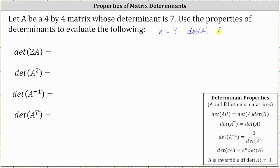For the first example, we have the determinant of two A. Looking at the properties, we'll be using this last property. The determinant of C times A, where C is a constant, is equal to the constant C raised to the power of n, where n is determined by the dimensions of the square matrix, times the determinant of matrix A. So the determinant of two A is equal to two raised to the power of n, which is four, times the determinant of A.